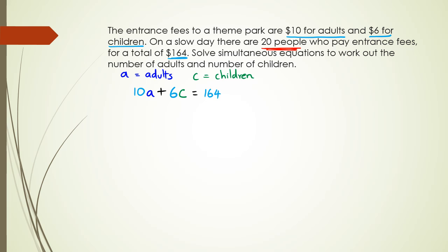My second equation is having a look at the actual number of people that came. a stands for adults, it actually stands for the number of adults and c is the number of children, which means the number of adults and the number of children, if you add them up, you should get 20. And now I have my two equations, I've got 10a plus 6c equals 164, and a plus c equals 20.